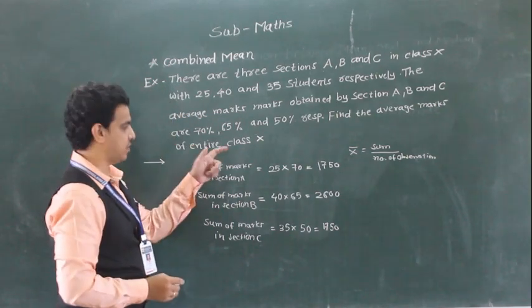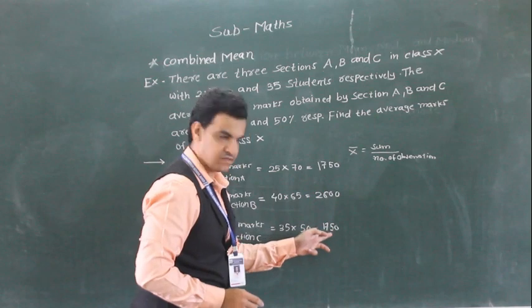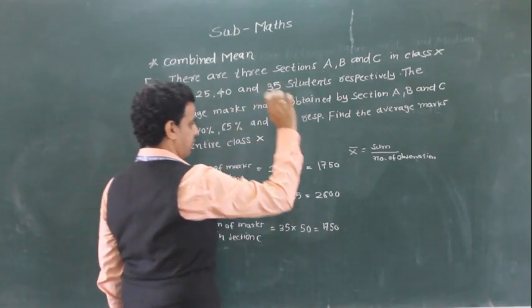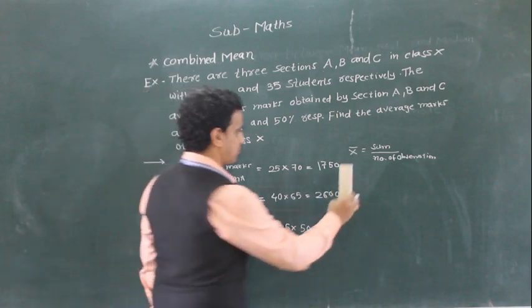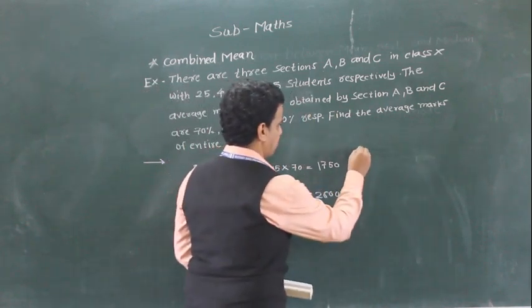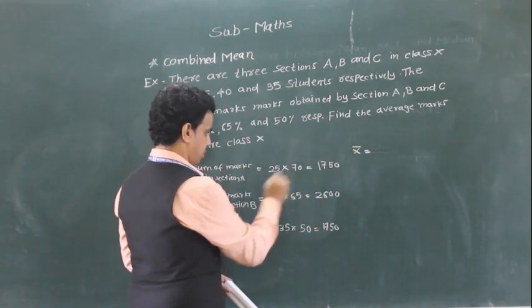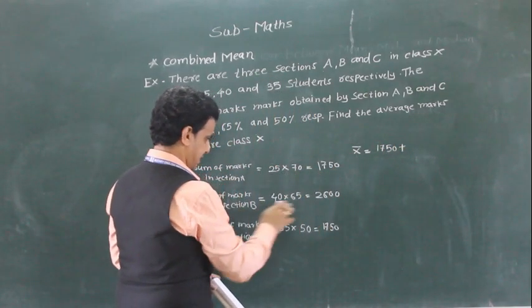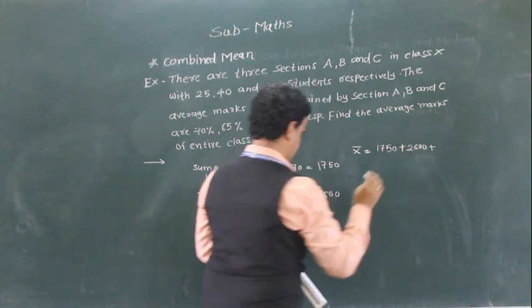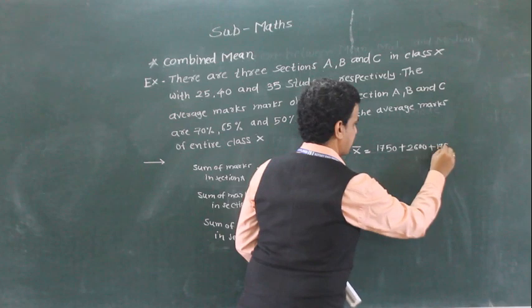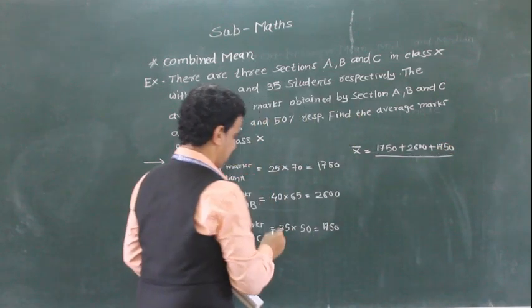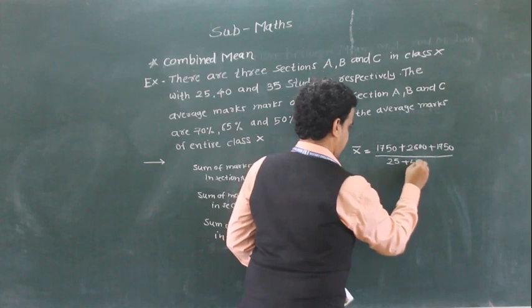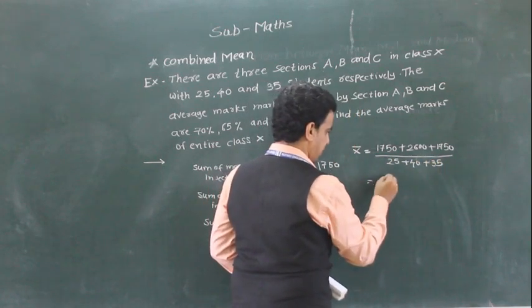Now we have to find the average marks of the entire class. So we have to add all these sums and divide by the total number of students, that is 25 plus 40 plus 35. So x-bar is equal to: first sum is 1750, plus second sum is 2600, plus last sum is 1750, divided by number of students, which is 25 plus 40 plus 35.